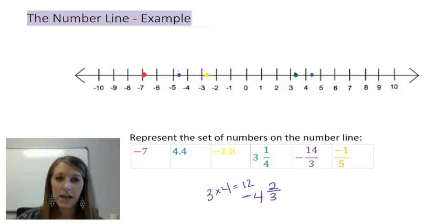The last number is negative 1 fifth. We're going to draw that one in orange, and that is going to be between 0 and negative 1 because it's on the negative side of it. And if I cut it into fifths, then it is just 1 fifth away from 0 on the number line.